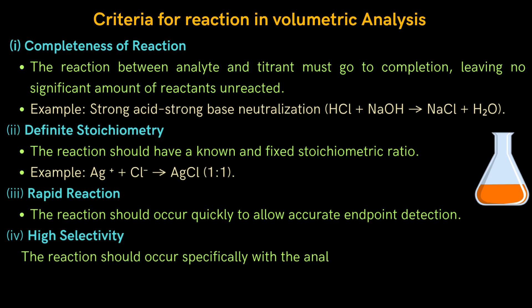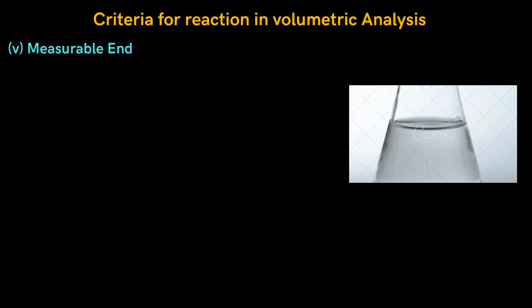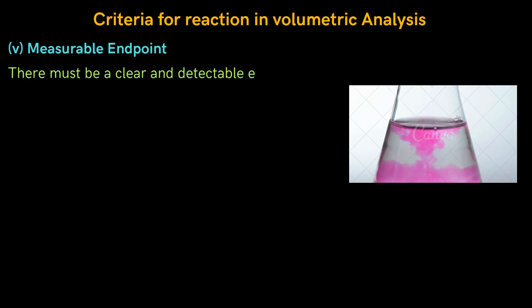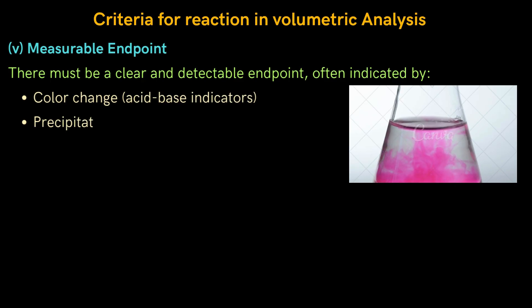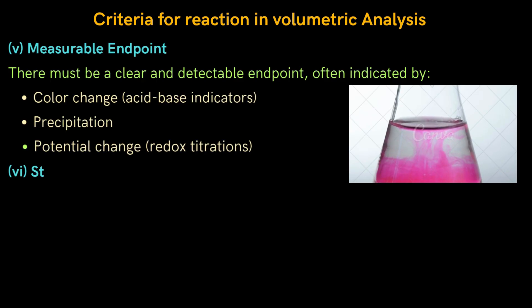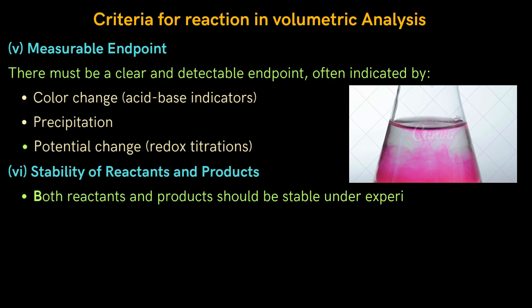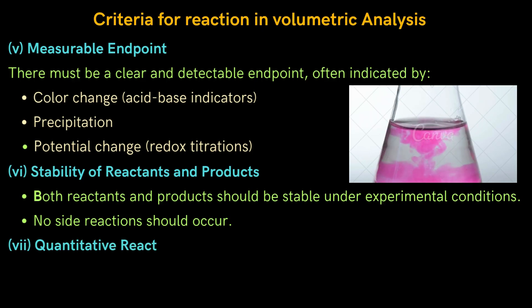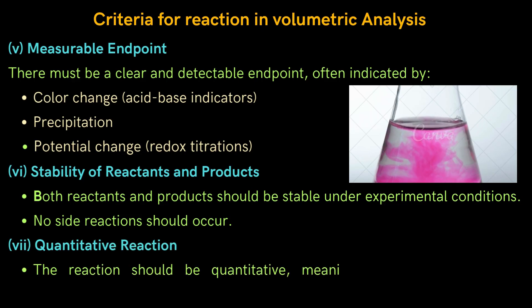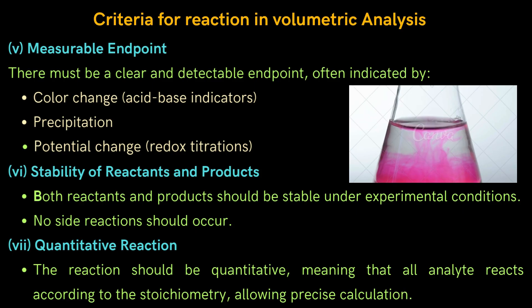Fourth: high selectivity — the reaction should occur specifically with the analyte, without interference from other substances in the solution. Fifth: measurable endpoint — there must be a clear and detectable endpoint, often indicated by color change, acid-base indicators, precipitation, potential change, or redox titrations. Sixth: stability of reactants and products — both reactants and products should be stable under experimental conditions, and no side reactions should occur. Seventh: quantitative reaction — the reaction should be quantitative, meaning all analyte reacts according to the stoichiometry, allowing precise calculation.